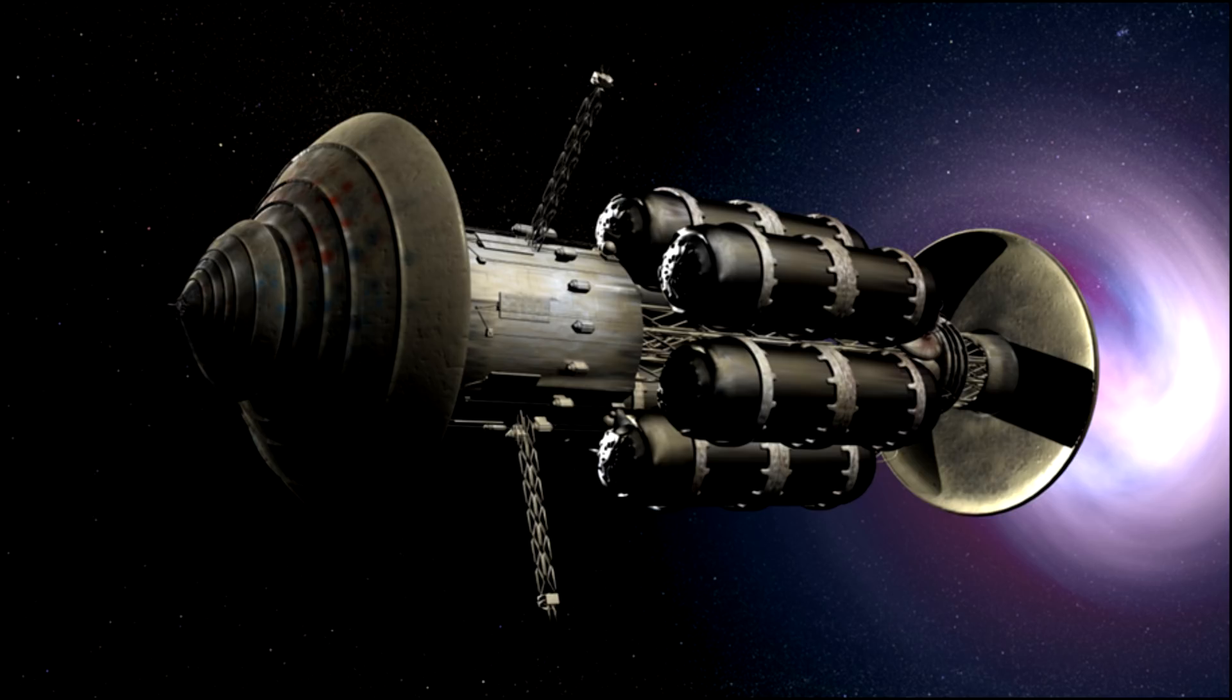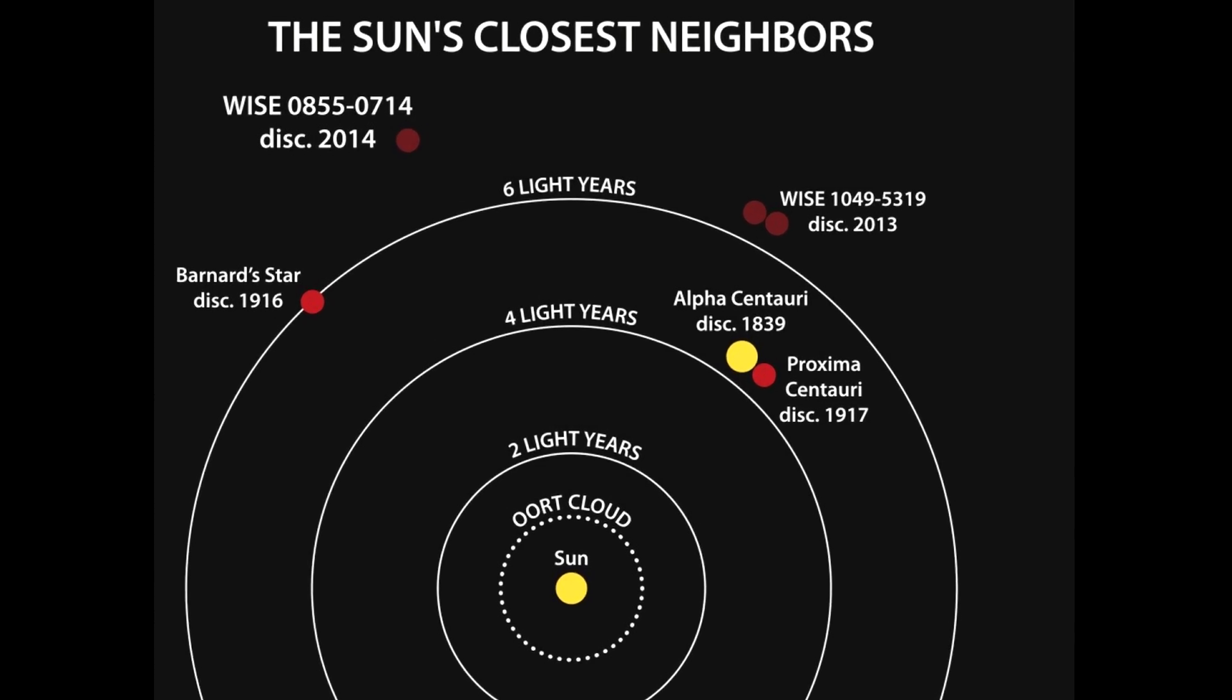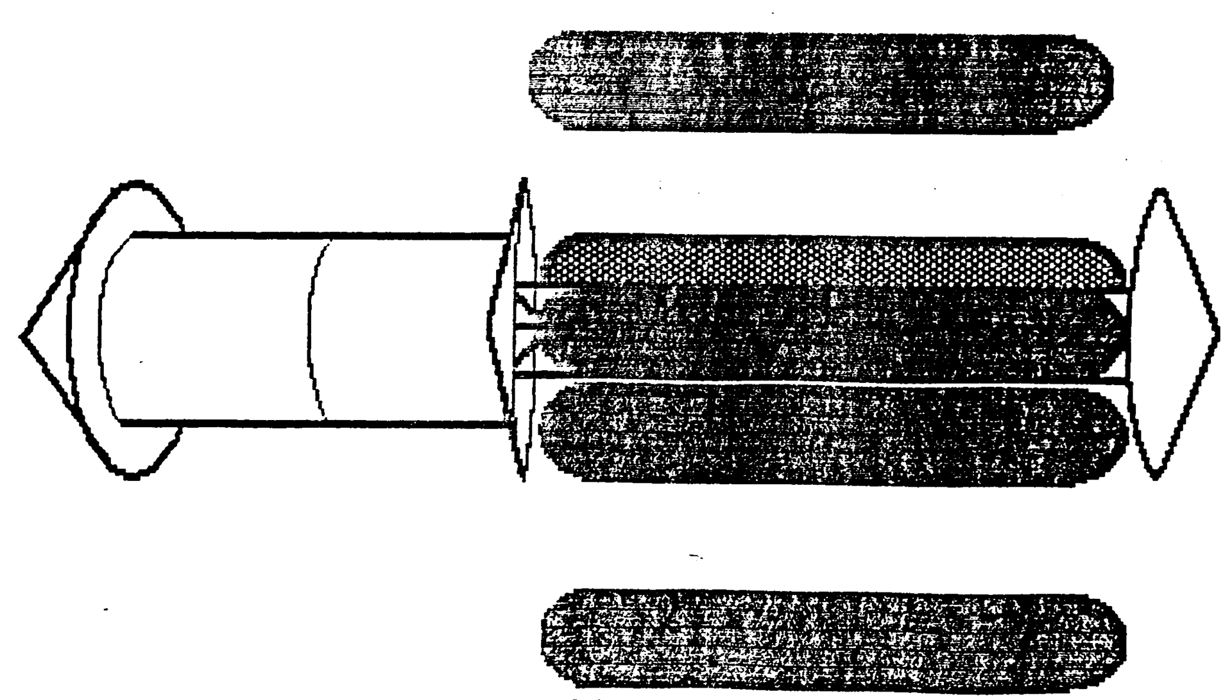Next up in 1987 was project Longshot which aimed to use a nuclear fission drive to reach Alpha Centauri, 4.4 light years from earth. All these projects were cancelled due to technical limitations of the time.